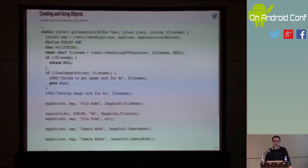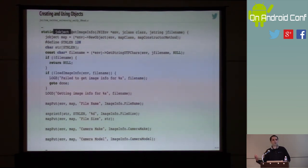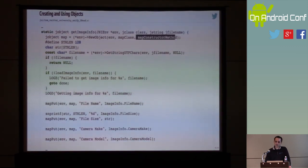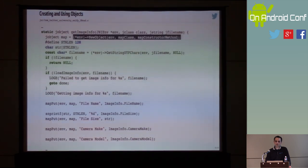This is the other function — getImageInfo — which is supposed to return a map. How do you create an object in C? Remember how we previously looked up a constructor of TreeMap and looked up the actual class? Well, once we have both, we can essentially call newObject — the equivalent of constructor.invoke in Java.